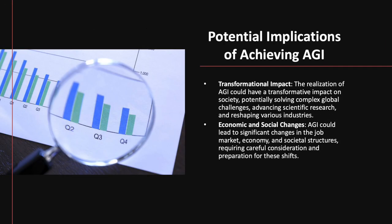Potential implications of achieving AGI. The achievement of AGI is expected to profoundly influence society, with the potential to address intricate worldwide issues, propel scientific inquiry, and transform numerous industries. Additionally, AGI may bring about major alterations in employment, economic landscapes, and social frameworks, necessitating thoughtful planning and readiness for these impending changes.